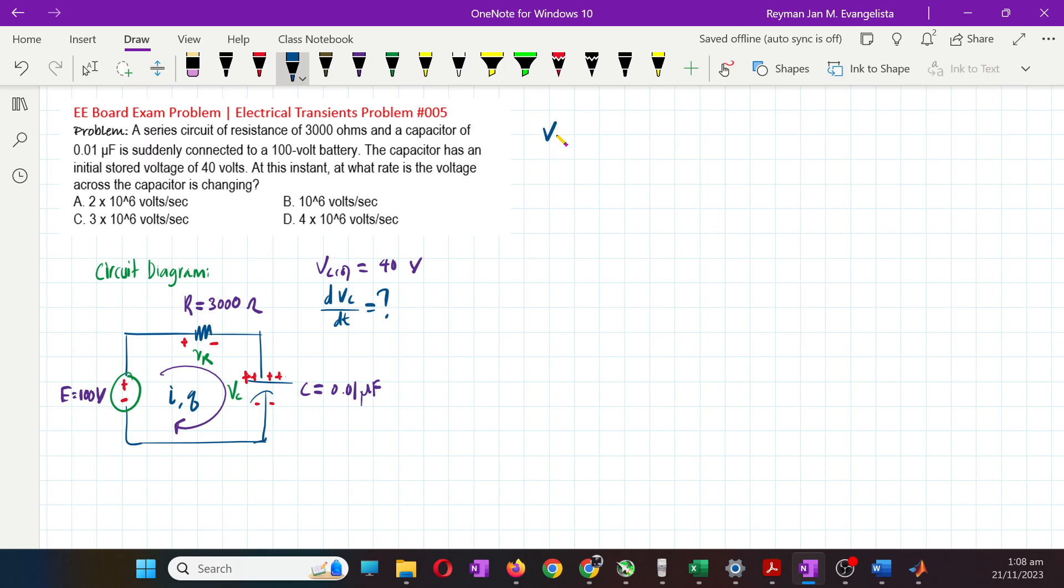Our Vc equals A plus B e raised to negative t over RC. There will be two constants here - A and B are arbitrary constants, or simply constants.